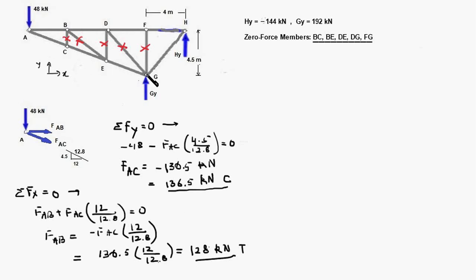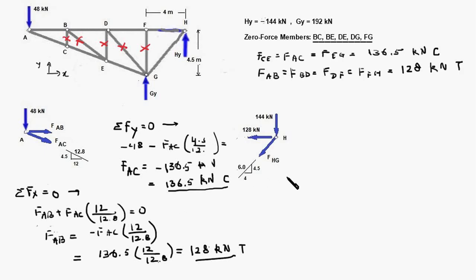So now we know the internal forces in all the four members on the top row they are tensile and equal to 128 kilonewtons and the three members AC, CE and EG have compressive force of 136.5 kilonewtons so let us now do equilibrium analysis of joint H so that we can find out the internal force in member GH.